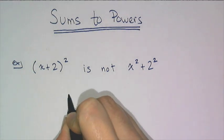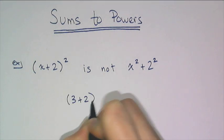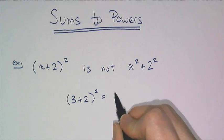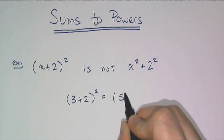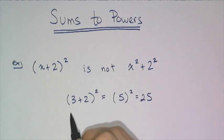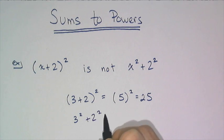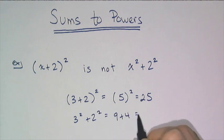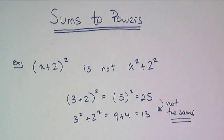If I replace the x with a 3 and I follow the order of operations and simplify what's inside the parentheses first, I get 5² which is 25. If you think it's just to sprinkle the exponents and you do this, you get 9 plus 4 which is 13, which is not equal. So you don't just sprinkle the exponents.